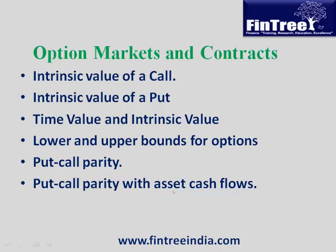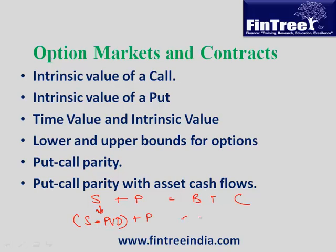Finally, put-call parity with assets that have cash flows — i.e., put-call parity on a dividend-paying stock. The regular formula is S + P = B + C. Since it's a dividend-paying stock, we reduce the dividend from S, so it becomes: (S − PV of dividend) + P = B + C.